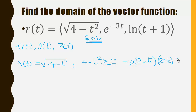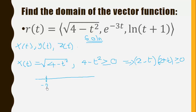This is an inequality and we can solve it using a number line. Setting each factor equal to zero gives t equal to negative 2 and t equal to positive 2. The boundaries are inclusive because substituting t = 2 gives 0, and 0 is greater than or equal to 0, so they satisfy the inequality.